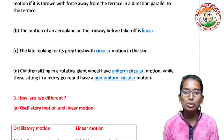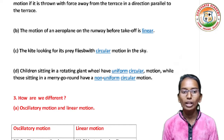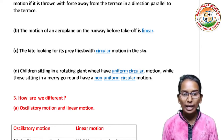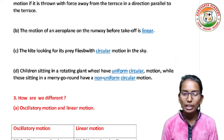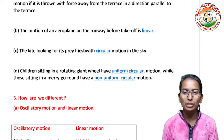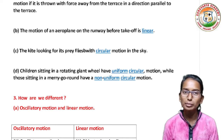Secondly, the motion of an aeroplane on the runway before take-off is linear. The kite looking for its prey flies in circular motion in the sky. And lastly, children sitting in a rotating giant wheel have uniform circular motion, while those in a merry-go-round have non-uniform circular motion.